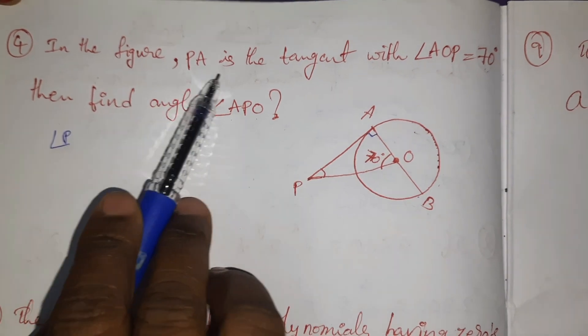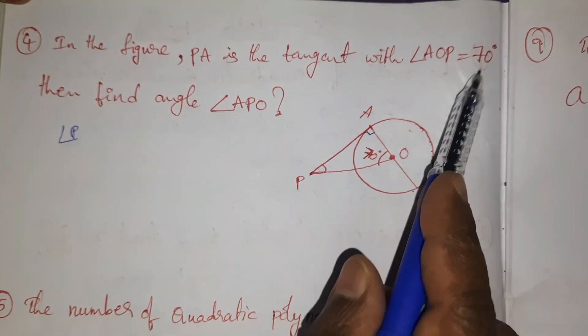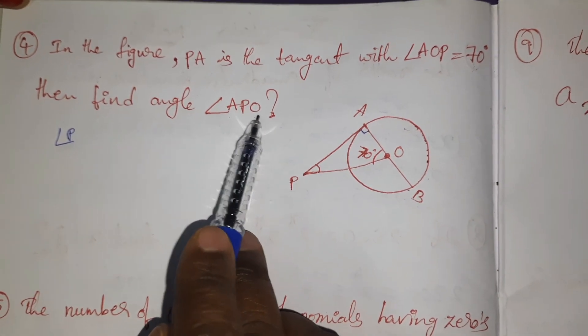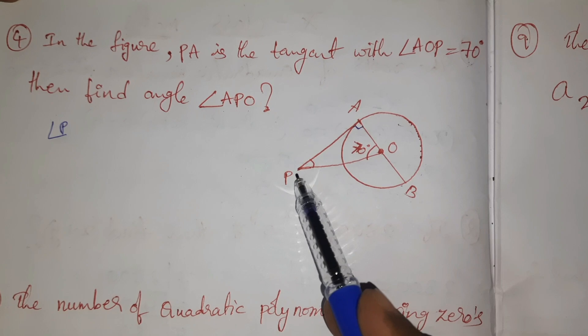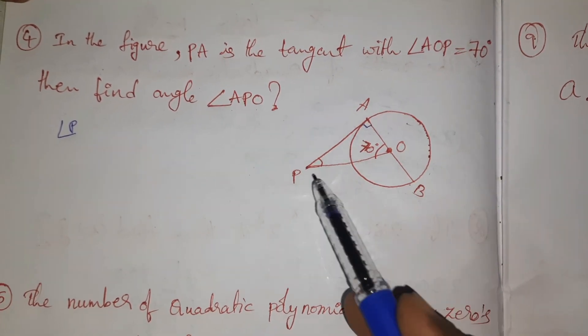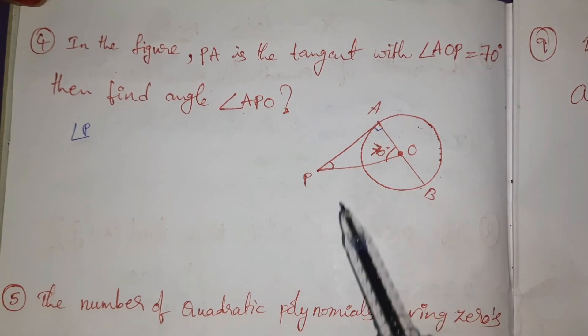In the figure, PA is the tangent with angle AOP = 70°. Then find angle APO. In the figure, given PA is tangent and AB is the diameter. So PA and AO making 90°. So angle PAO = 90°.